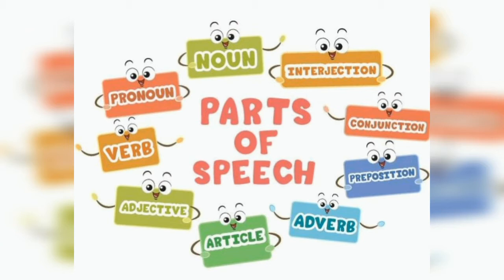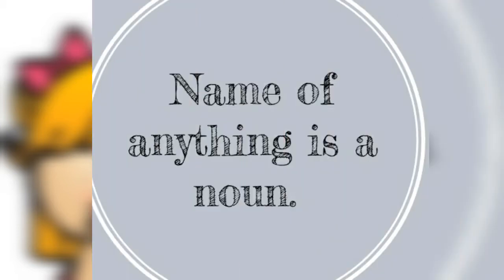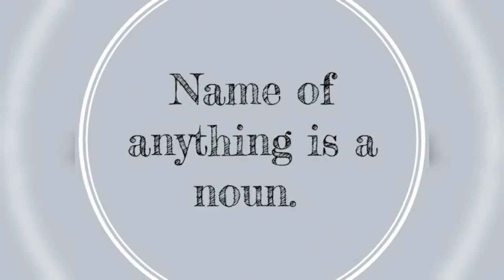Let's discuss these parts in detail. Firstly, we have noun. The traditional definition of noun is: a noun is a name of person, place, thing, or animal. As we know that noun is a kind of word that is usually the name of something, we can make a simple definition of noun: name of anything is a noun.